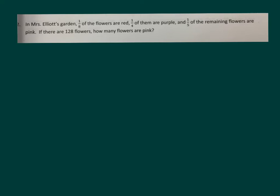In Mrs. Elliott's garden, 1/8 of the flowers are red, 1/4 of them are purple, and 1/5 of the remaining flowers are pink. If there are 128 flowers, how many flowers are pink?